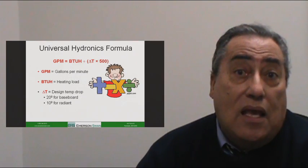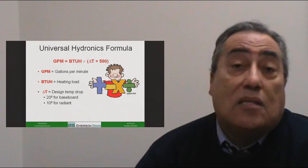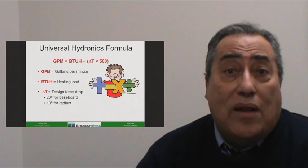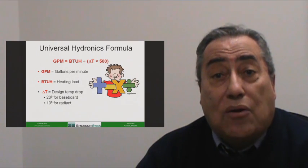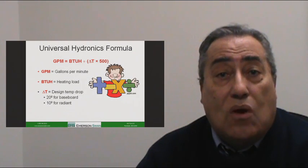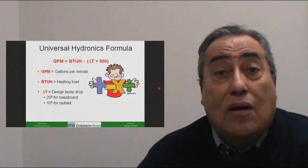On a radiant system, the Delta T is 10 degrees. In a typical radiant system, it might go out at 130 degrees and come back at 120 degrees. If the Delta T is any wider than that, you might end up with cold spots at the end of the run. So we design radiant systems around a shorter Delta T.